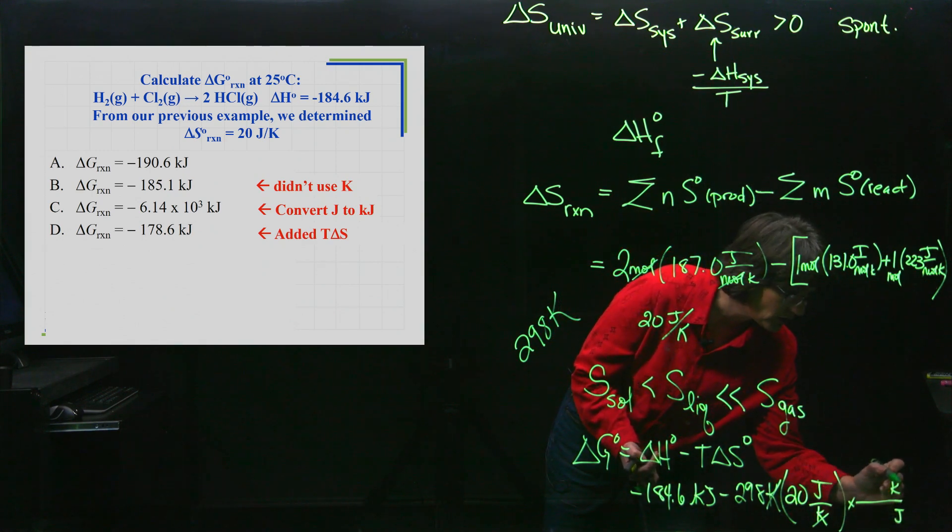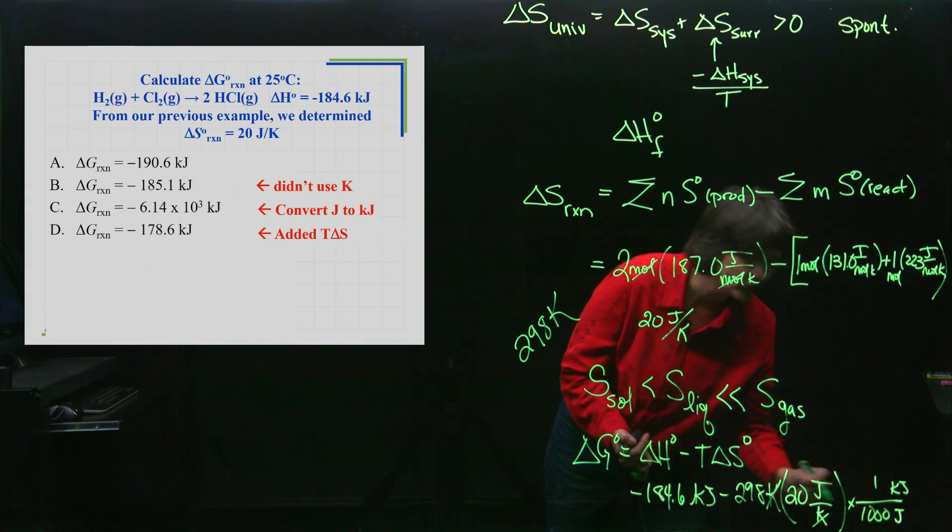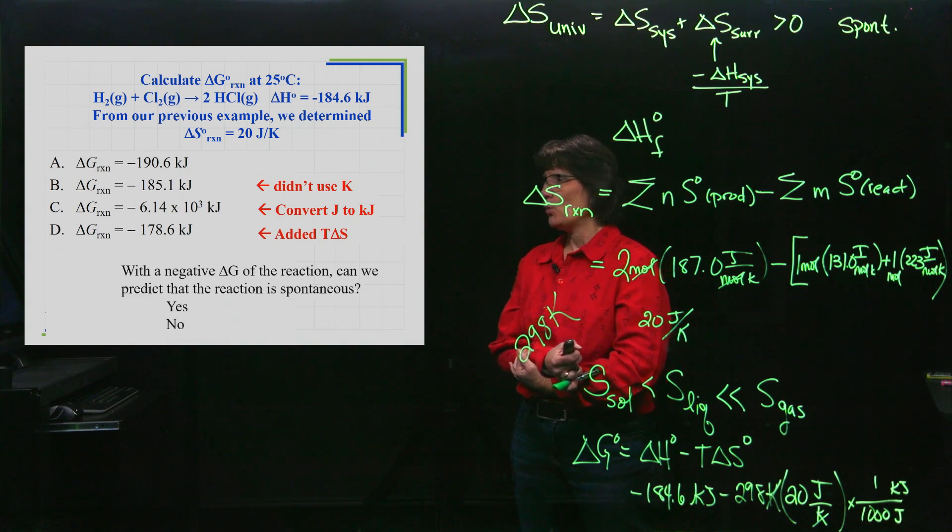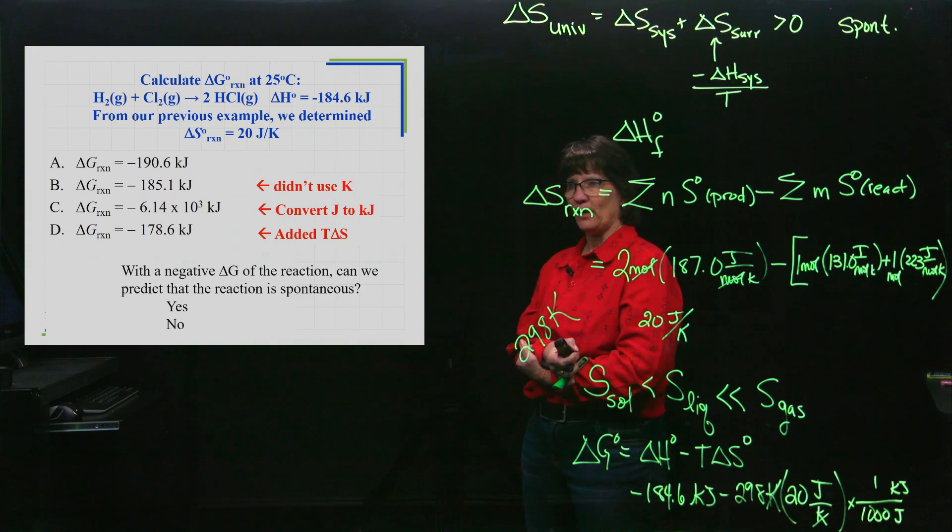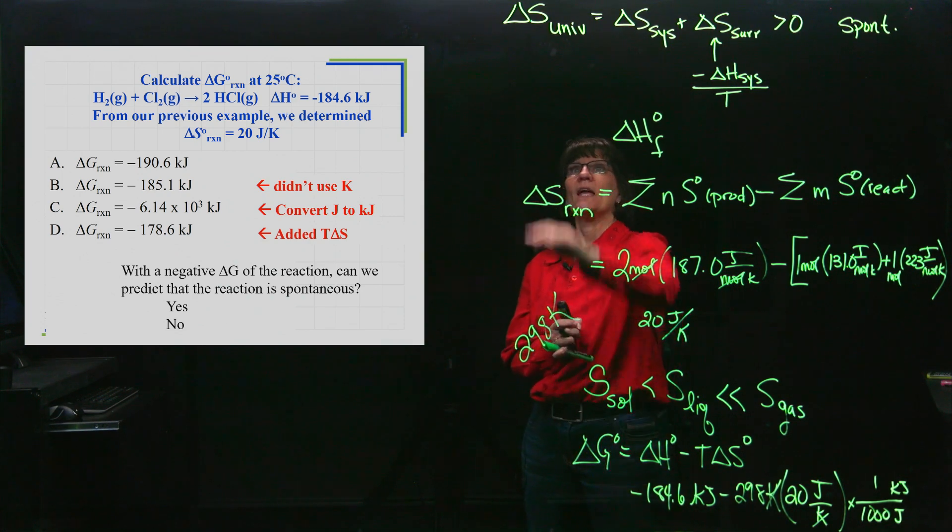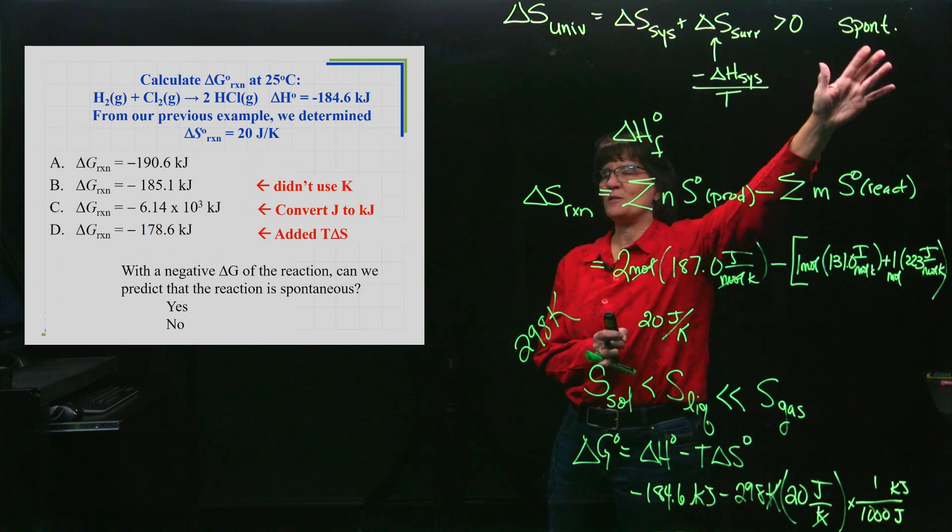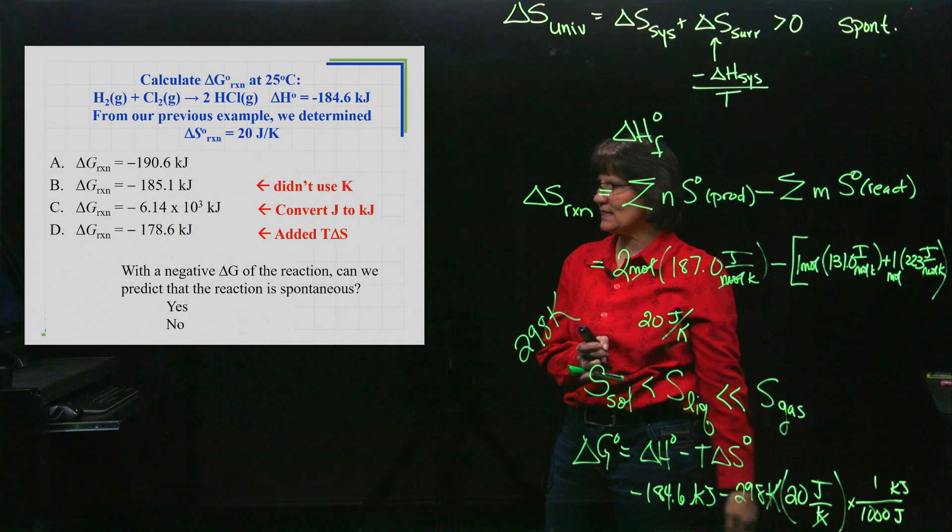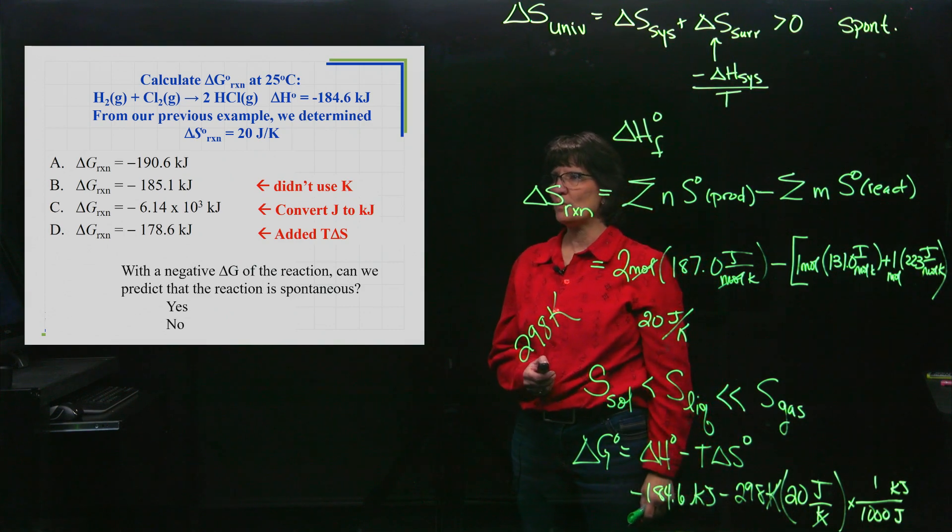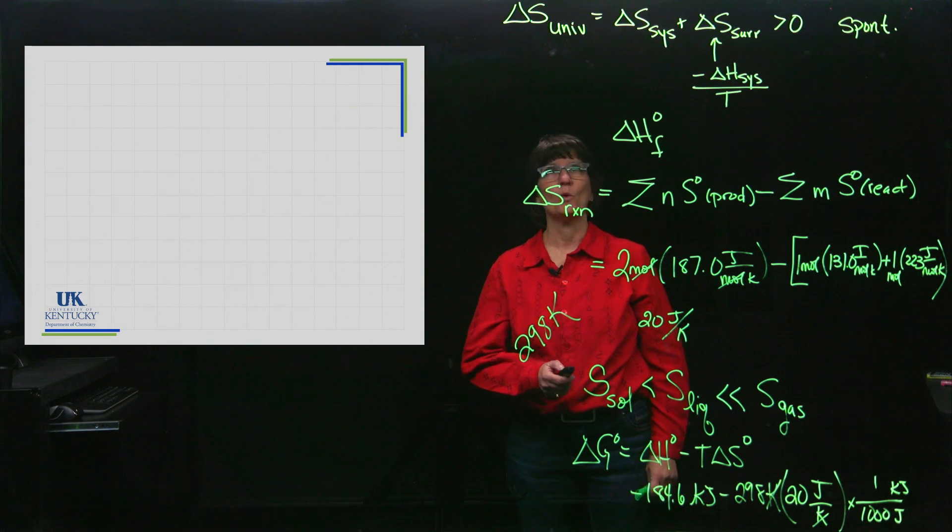You've got to convert your joules to kilojoules. Take a thousand joules to equal a kilojoule, and that will give you the answer. Once you have that value, it's a negative 190.6. With that negative ΔG of the reaction, can we predict that the reaction is spontaneous? Well, yes. You don't have to know the ΔS of the universe. The other option is to know the ΔG of the reaction. The ΔS of the universe must be positive to be spontaneous; the ΔG of the reaction must be negative to be spontaneous. So this reaction is spontaneous as it is written.